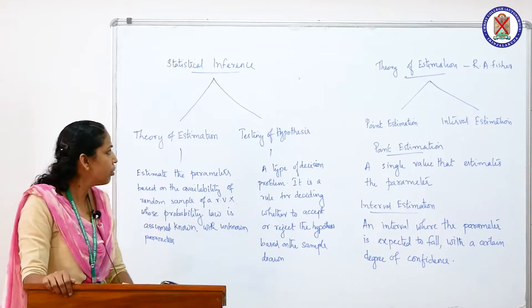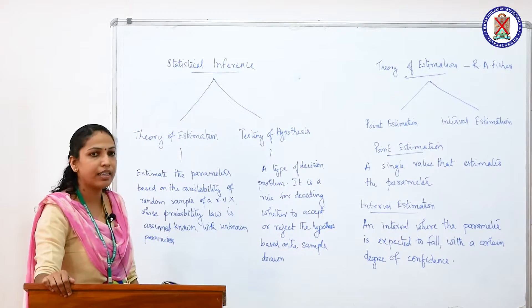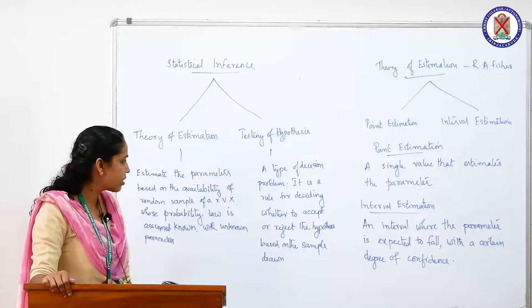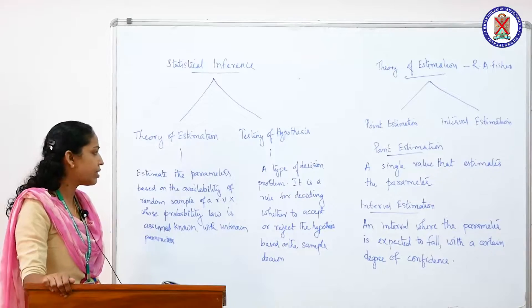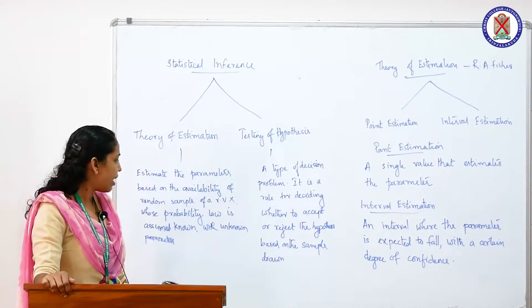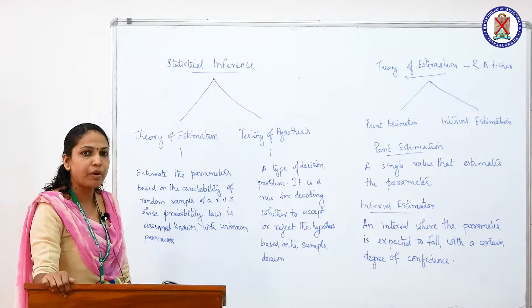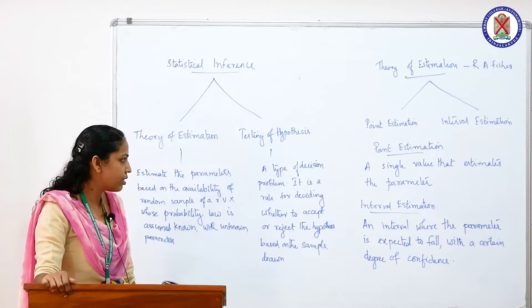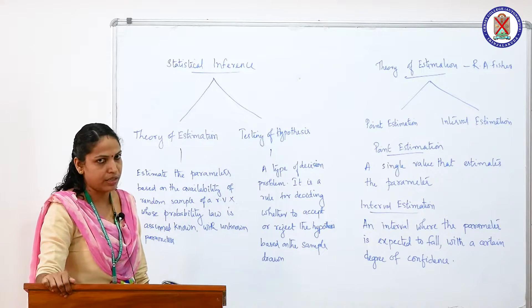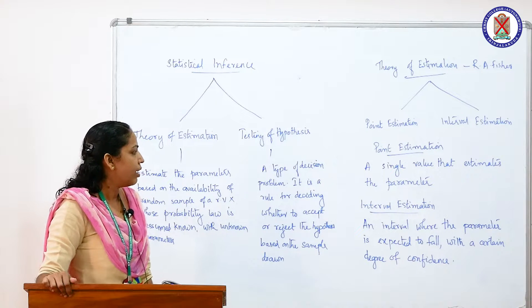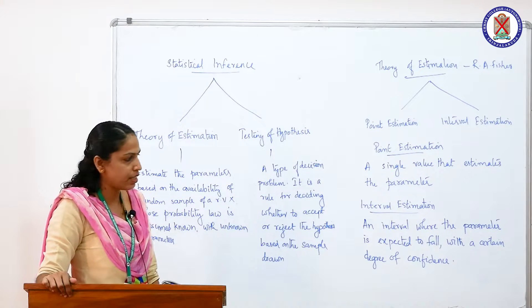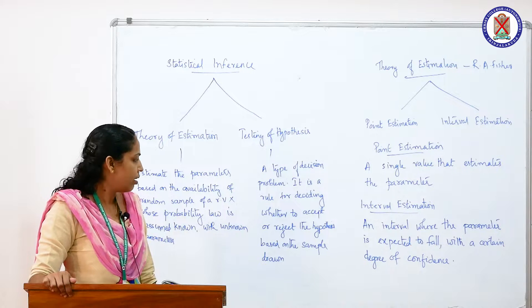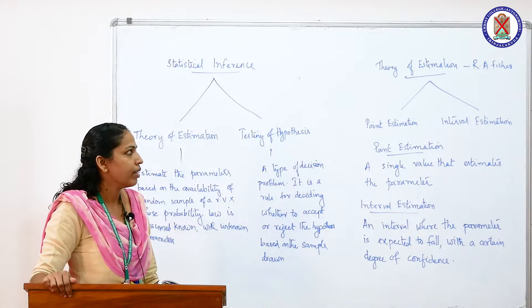We have two divisions of statistical inference: the theory of estimation and testing of hypothesis. In theory of estimation, we estimate the parameters which are expected to be unknown, but the probability law is assumed to be known. In testing of hypothesis, we take a decision — it is a decision making problem. It is a rule for deciding whether to accept or to reject the hypothesis based on the sample drawn from a particular population.